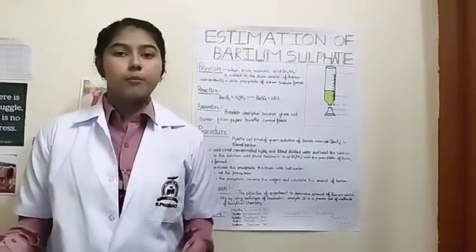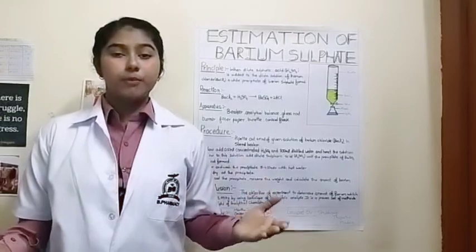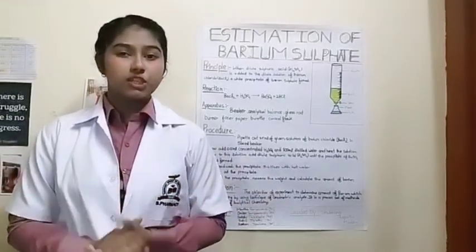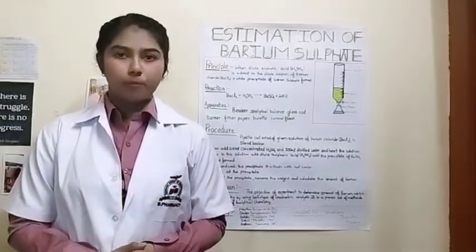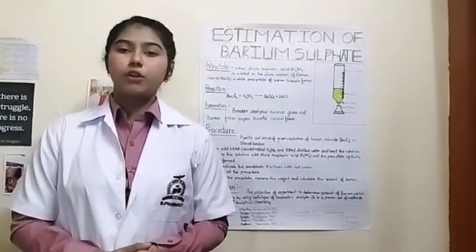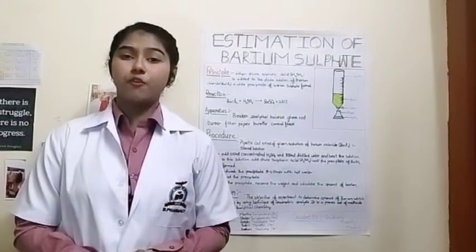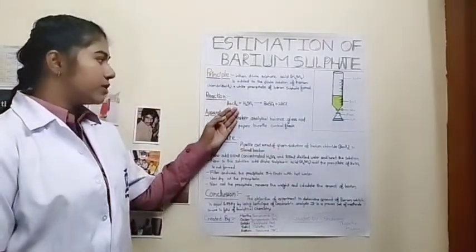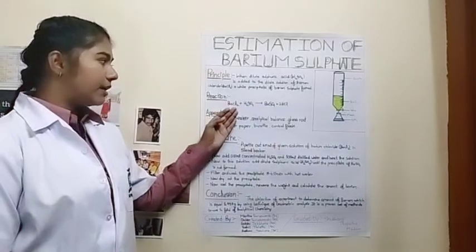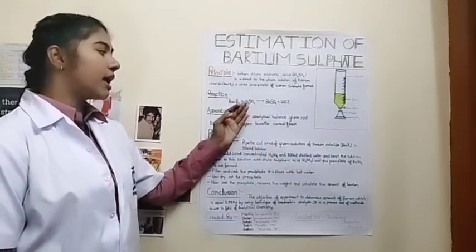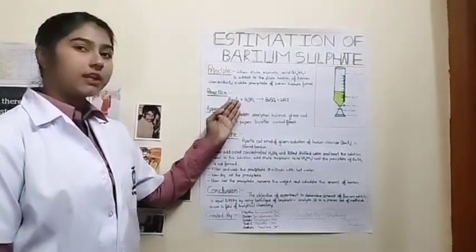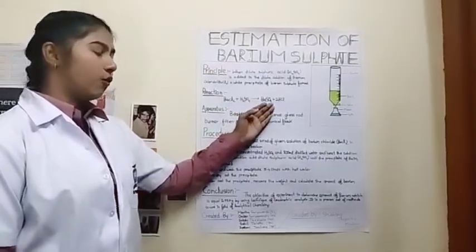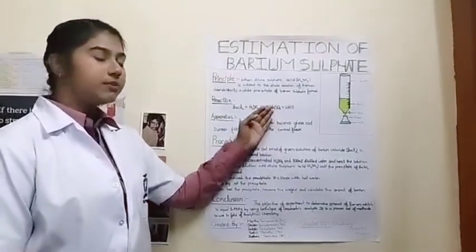When two chemicals, barium chloride and sulphuric acid, react with each other, barium sulphate is formed. The chemical formula for this procedure is: BaCl2 (barium chloride) and H2SO4 (sulphuric acid) react with each other and form a product called BaSO4, which is barium sulphate.